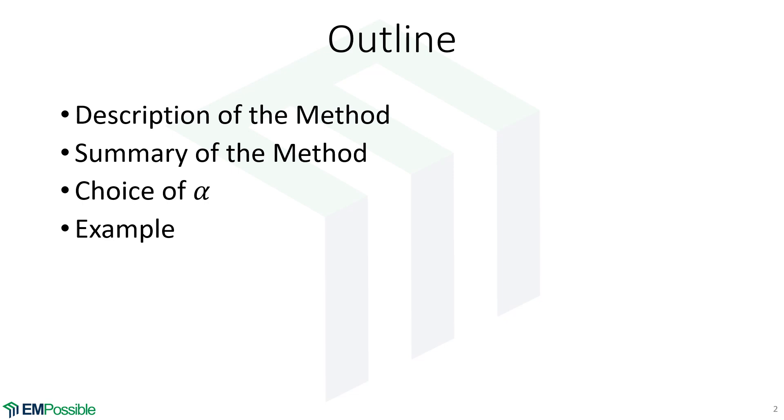So we'll describe the method, we'll summarize it, and then we'll talk about the choice of this parameter alpha, which essentially controls how far we step from one point to the next as we try to converge onto the extrema. And then we'll work through an actual example with real numbers.